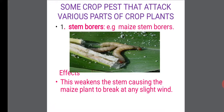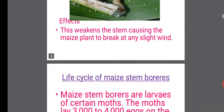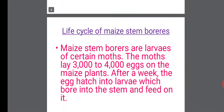Let's look at some crop pests that attack various parts of crop plants. The first one is the stem borers. As the name implies, they bore stems. The example we can see is maize stem borers, and you have the image below. The effect of maize stem borers is that it weakens the stem and causes the maize plant to break at just any slight wind.